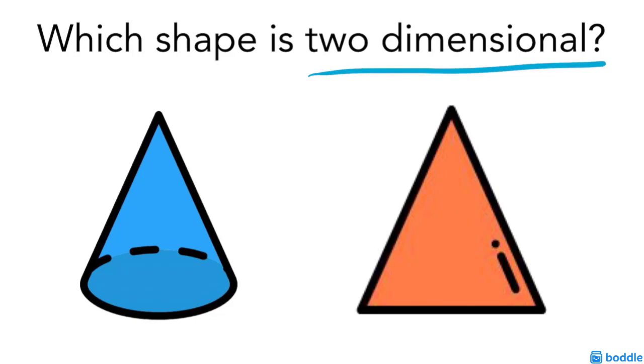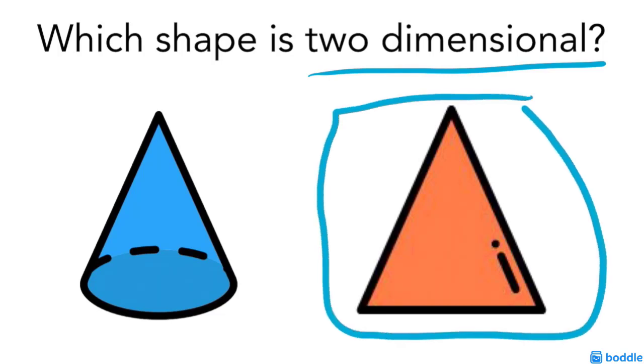Two dimensional shapes are flat shapes. The orange triangle would be the two dimensional shape.